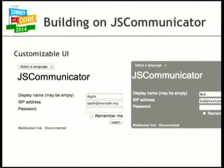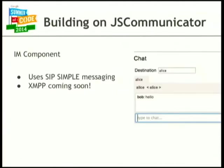I customized the UI with a skin file that can be easily modified to change color and appearance of JSCommunicator - easy to insert your icons and branding. I also added an IM component that uses SIP Simple Messaging. We're discussing migrating this to XMPP for better compatibility with other applications, but right now it works well. When you call, it automatically starts a chat session, though offline messages don't work yet.